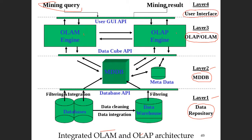To communicate between the different layers, some APIs — Application Program Interfaces — are required. The database API is used to link and extract data from layer one to layer two. The data cube API is used for access from layer two to layer three. The third is the graphical user interface API.